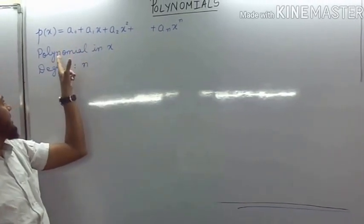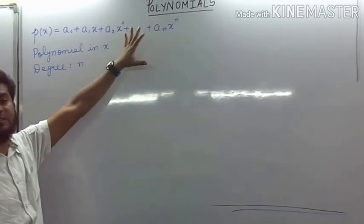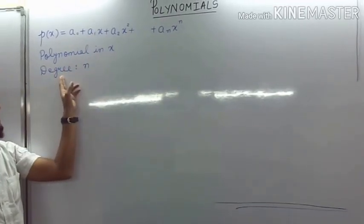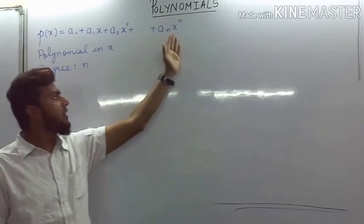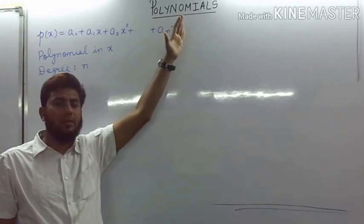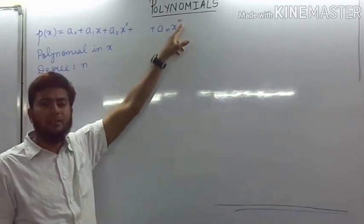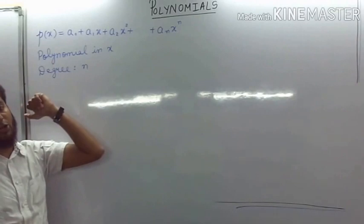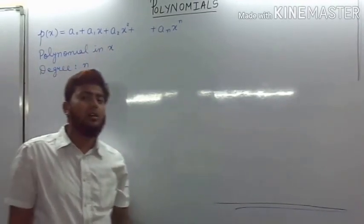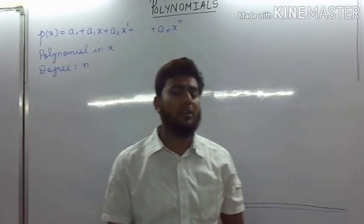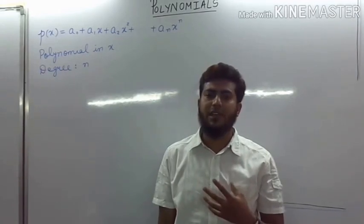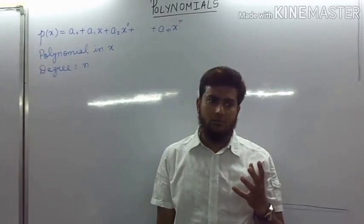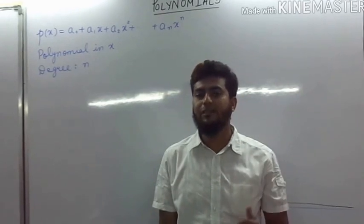We write this as a polynomial in terms of x because the variable is x. The degree — that is the highest possible power of the variable — here we are having n, which will be called the degree of this polynomial. Degree is only a whole number; we will not get a degree written as a fraction or a negative number.